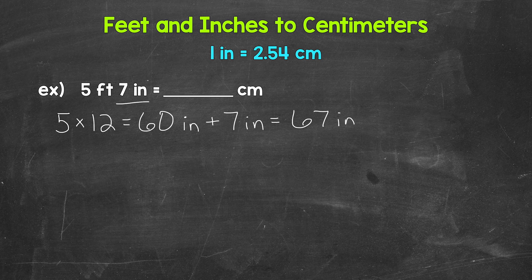So 5 feet 7 inches equals 67 inches. Now let's convert those inches to centimeters.